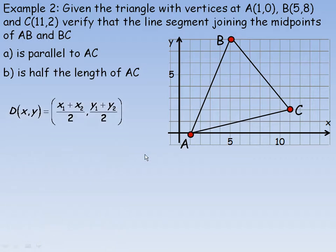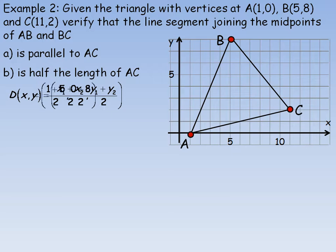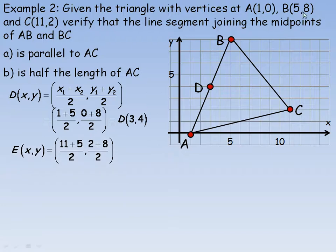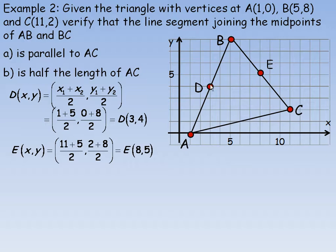Here's the midpoint formula. I'll call D the midpoint of AB. So for points A and B we add 5 and 1, and 8 and 0. So 1 and 5 is 6 divided by 2 is 3. 0 and 8 add to 8, and 8 divided by 2 is 4. So the midpoint of AB, which I'll call point D, is the point (3, 4). Now we'll find the midpoint of BC, which I'll call E. For points B and C we'll be adding 11 and 5 divided by 2, and also 2 and 8 divided by 2. So 11 and 5 is 16 divided by 2 is 8. 2 and 8 add to 10, and 10 divided by 2 is 5. So that's point E, the midpoint of BC. We'll connect those two, drawing the line segment between E and D.